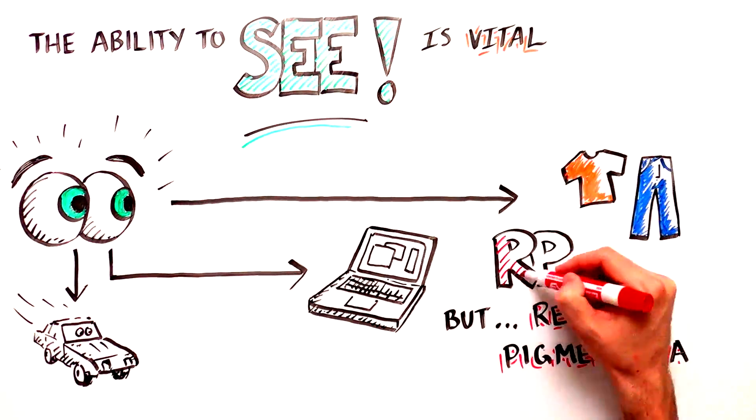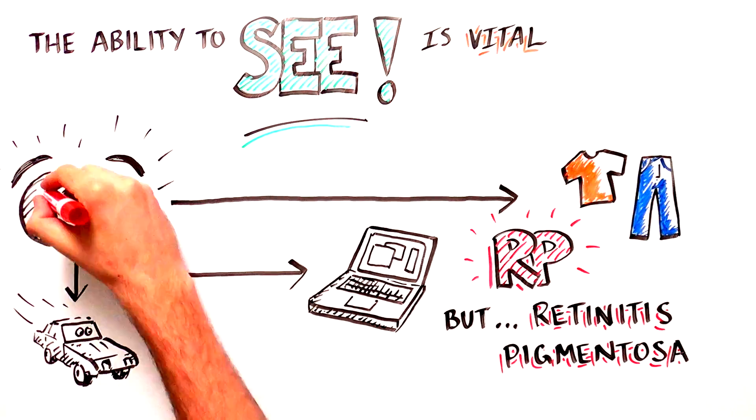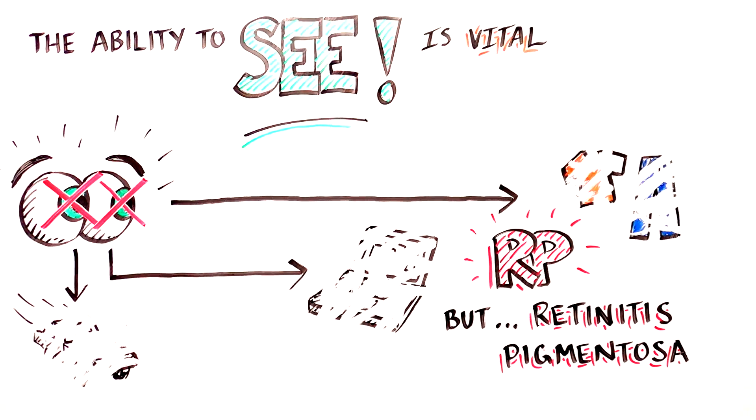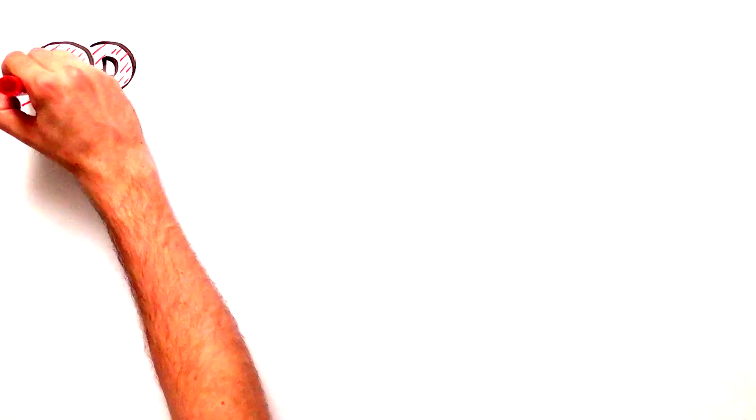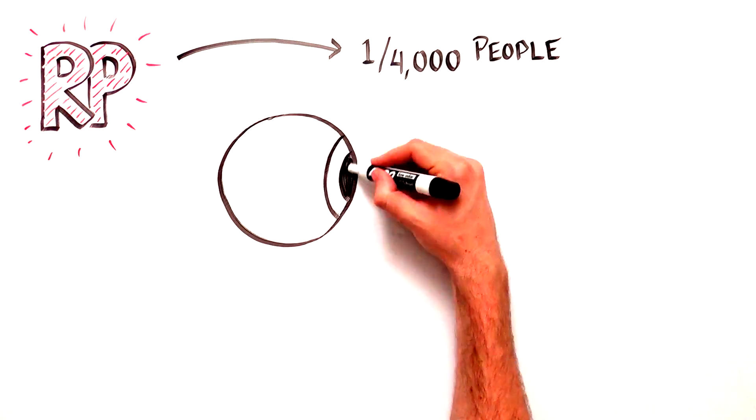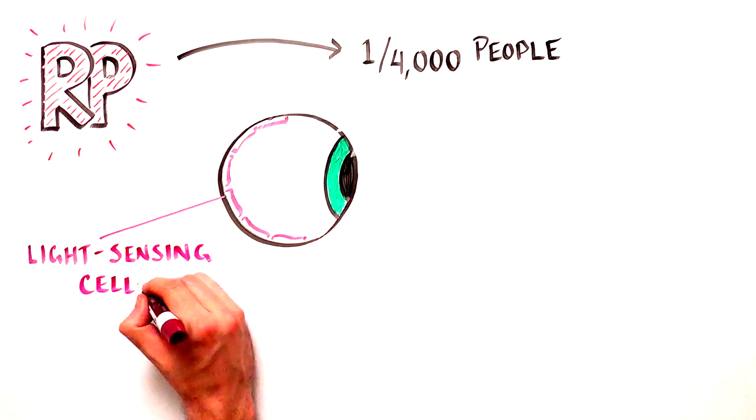However, it can be taken away by an incurable rare genetic disease known as retinitis pigmentosa. RP affects 1 in every 4,000 people and is caused when light-sensing cells in the eye are lost.